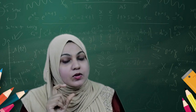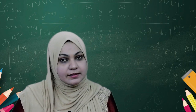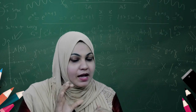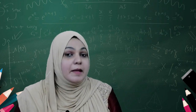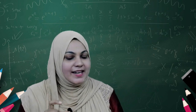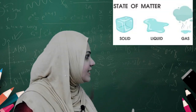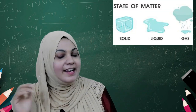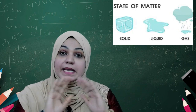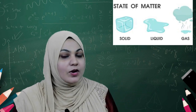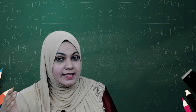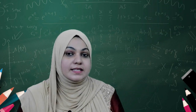Atoms are the building blocks of our matter. An object that occupies space and has mass is called matter. Matter is always found in three states: solid, liquid, and gases. Matter is made up of millions of tiny particles called atoms, whether it is solid, liquid, or gases. But the basic form is atoms.